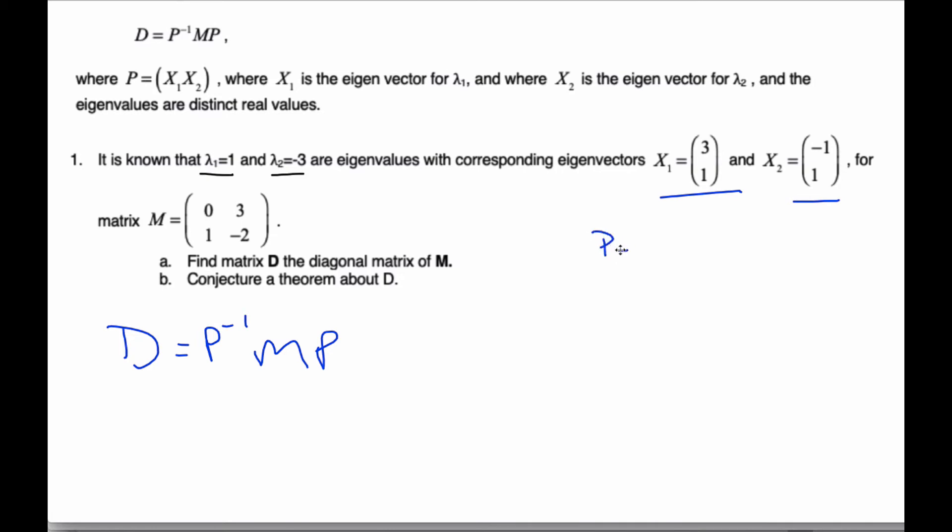Well, P, I'm told, is going to be the eigenvector of the first one, so 3, 1, and negative 1, 1. And so this is P created by these eigenvectors. P inverse, we use our inverse formula.